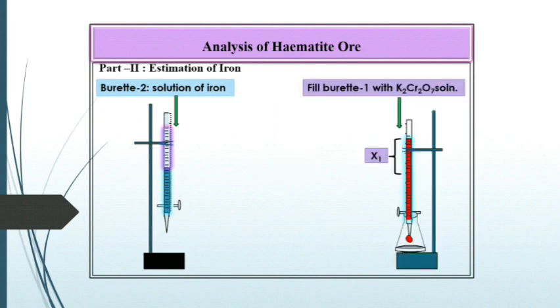Now titrate this solution with burette number 1 containing K2Cr2O7 solution drop by drop till the solution in the flask shows intense blue-violet coloration. Record this reading as X1 ml. This is the end point of the titration.